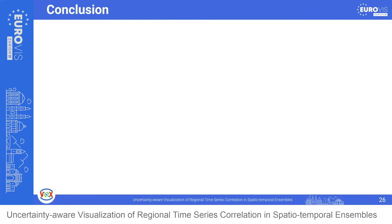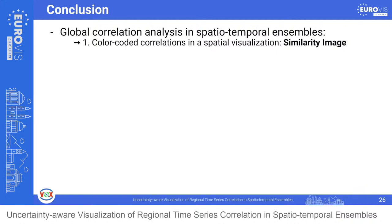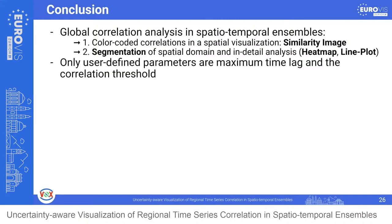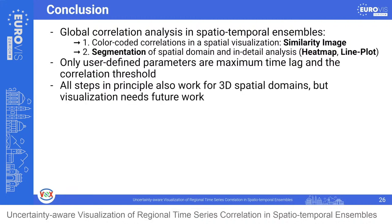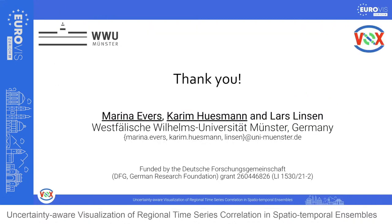To conclude, we defined a two-step approach helping analyze global correlations and their uncertainties in spatio-temporal ensembles. The first step creates a color-coded spatial visualization giving insight on how spatial correlations are distributed. In the second step, we use the similarity image to derive segmentations, heatmaps, and line plots. The only user-defined parameters are maximum time lag and correlation threshold, which are domain-specific characteristics. Though we only presented 2D results, in principle all steps also work for 3D spatial domains. An implementation can be found at GitHub. We thank Michael Böttinger for domain expert insight and CDFG for funding.